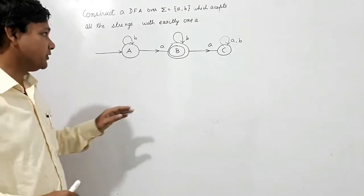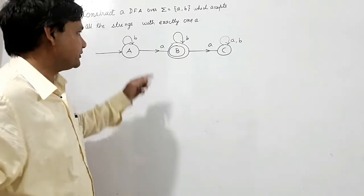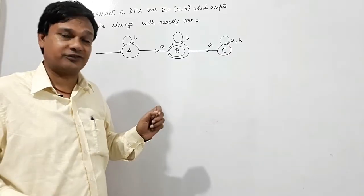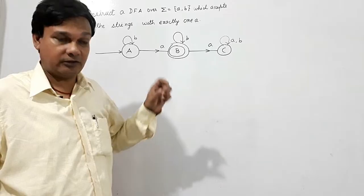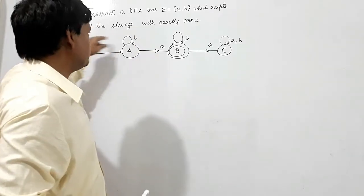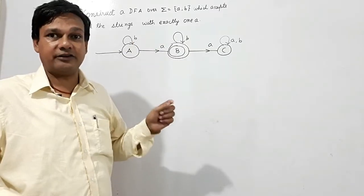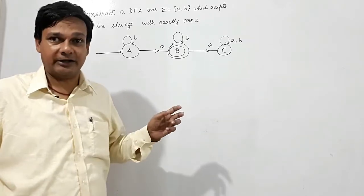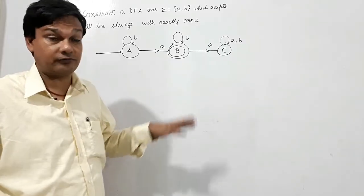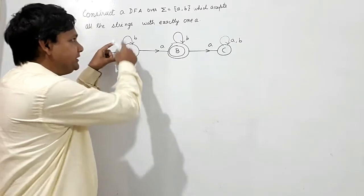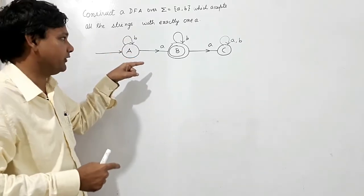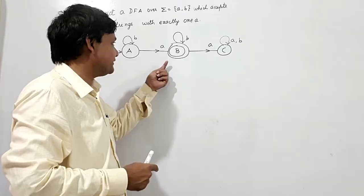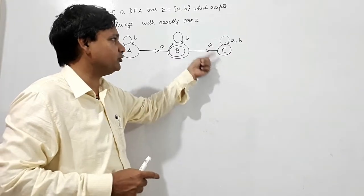A DFA must accept all the strings that satisfy the given condition, but it should also reject those strings which are not in that category. In this question, it should accept all strings with exactly one A. If there is no A or more than one A, it should be rejected — it should not reach the final state. If it has no A it stays in the initial state. When it gets one A it reaches the final state. When it gets another A it goes to the reject state.